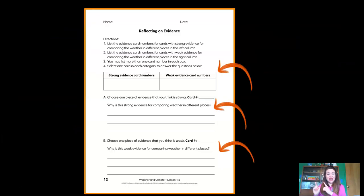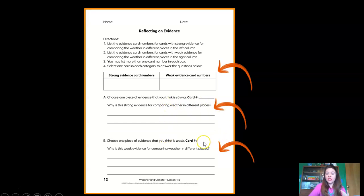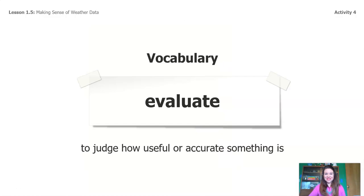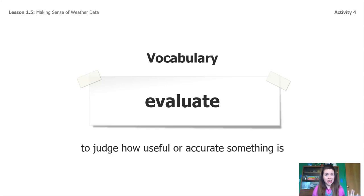If you have the Reflecting on Evidence document, pause the video and fill it out now. Write down all the strong evidence card numbers, all the weak evidence card numbers, then select one strong card and explain why it's strong, and one weak card and explain why it's weak. What you just did is a really cool skill called evaluating. Evaluate means to judge how useful or accurate something is. We looked at all those pieces of evidence and decided how useful they were — the strong evidence is useful, the weak evidence is not.